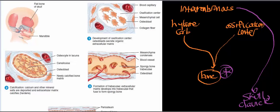Very similarly to endochondral ossification, we're going to have cells referred to as osteoblasts. These are the cells that synthesize the extracellular matrix of bones — the collagen fibers and hydroxyapatite, as discussed in the osteoblast physiology video. These osteoblasts are surrounded by blood capillaries, and they congregate alongside collagen fibers in what is called the ossification center.